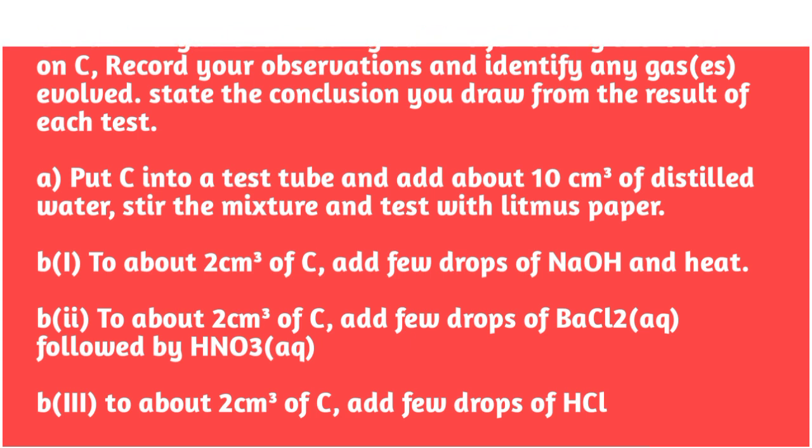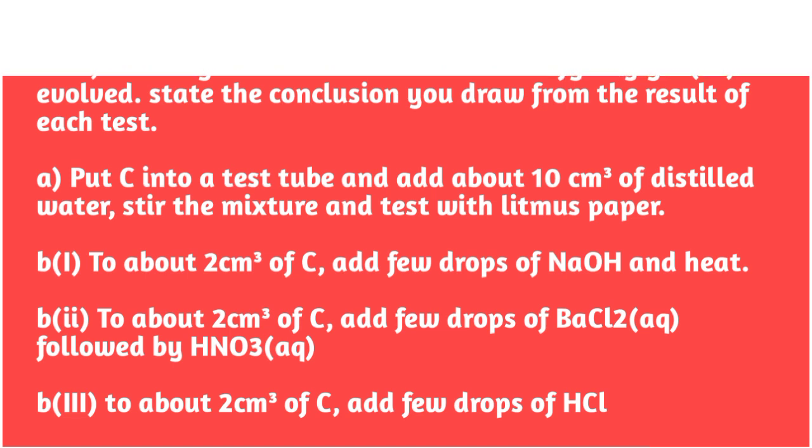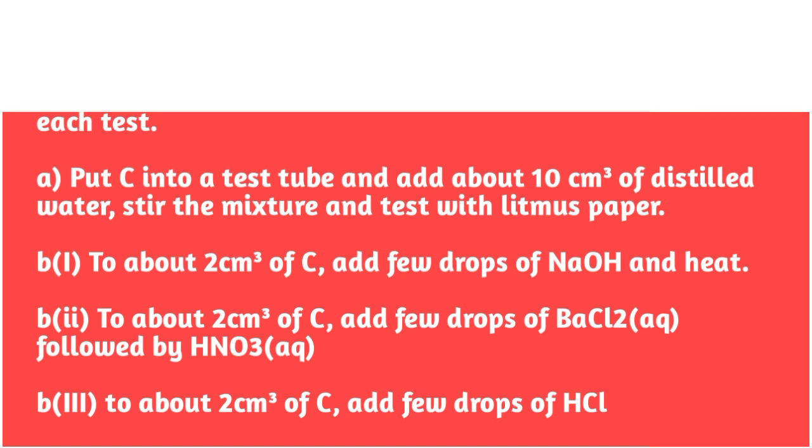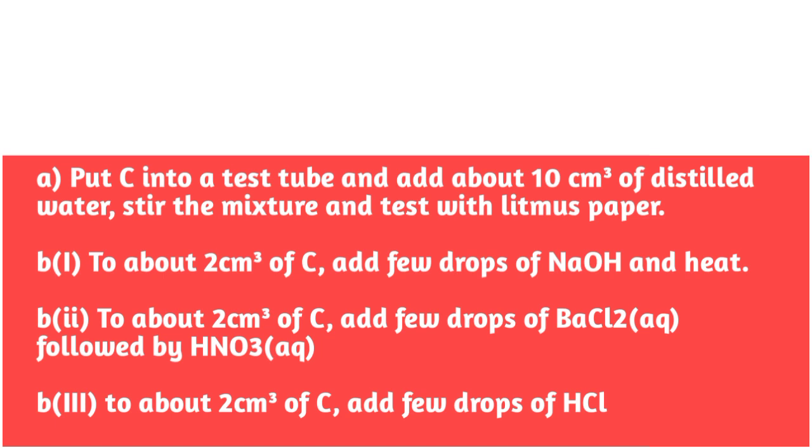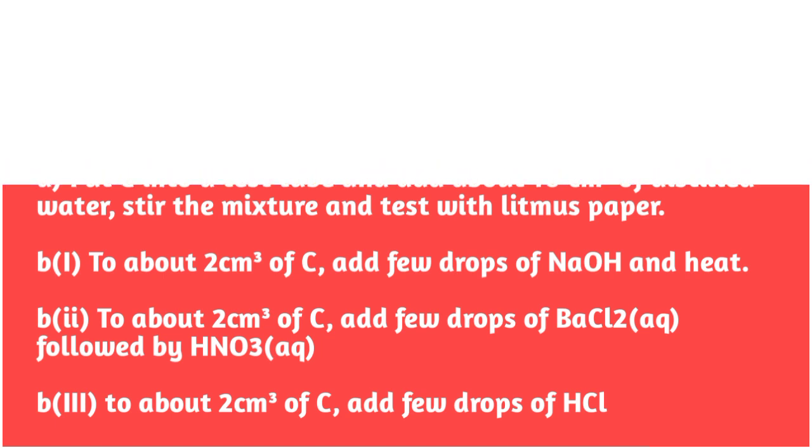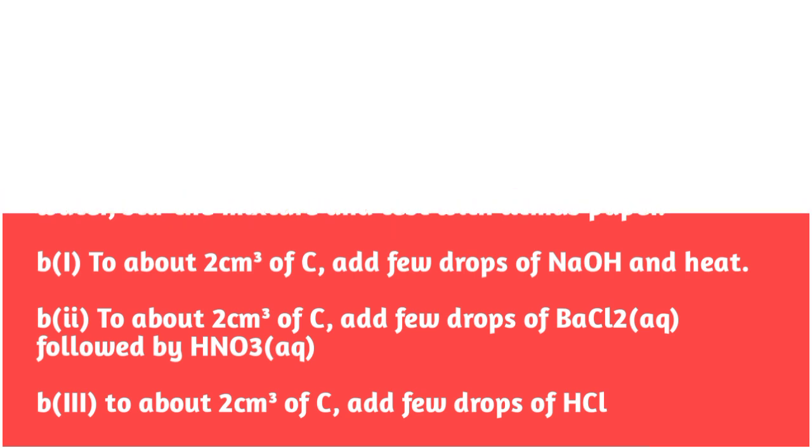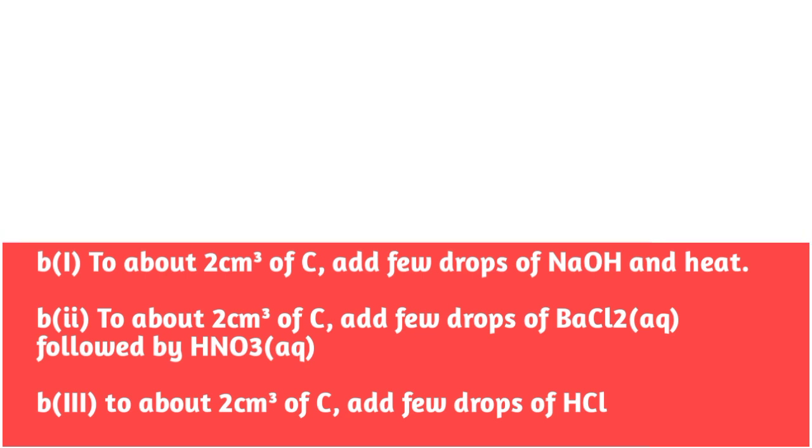Part B(i): To about 2 cm³ of C, add few drops of sodium hydroxide solution and heat the mixture. Part B(ii): To about 2 cm³ of C, add few drops of barium chloride solution followed by dilute trioxonitrate five acid. Part B(iii): To about 2 cm³ of C, add few drops of dilute hydrochloric acid.